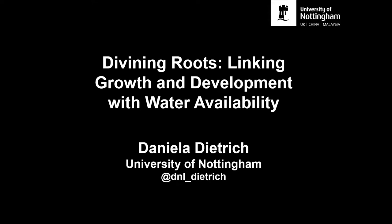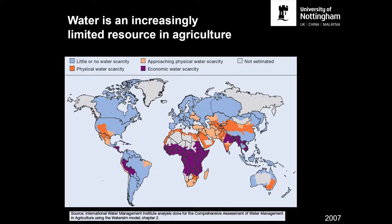I'm going to talk about root responses to differential water availability in soil. The reason why this is an important question is shown in this map here. Currently we're using around about 70% of all fresh water available on the planet for agriculture, mostly for irrigation. And in the regions highlighted in orange, water is already limiting for agriculture or is very rapidly becoming so. And as you can see, Israel is right in the middle of this orange region.